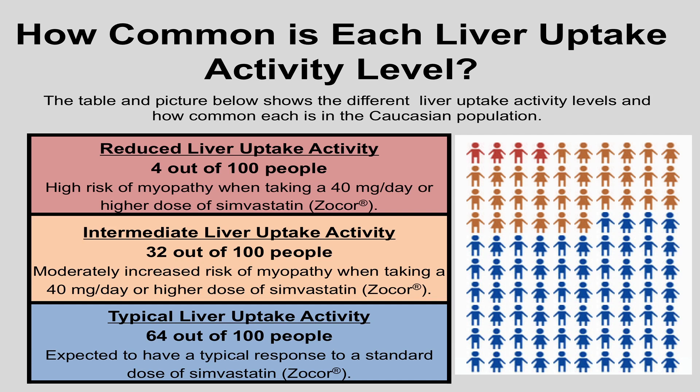Your personal CPMC results will show how common each liver uptake activity level is in your racial or ethnic group. You can view this information in your personal report by clicking on the About tab and then the How Common tab. Information is not available for all racial or ethnic groups. If data is not available for your race or ethnicity, your report will include information for the Caucasian population.